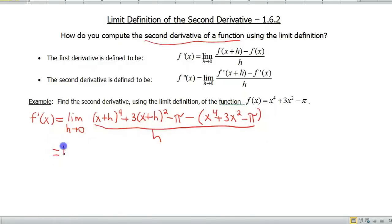Now I'm gonna have to subtract, and again, because my function comes in more than one piece, I'm gonna throw in a parenthesis, x to the fourth plus 3x squared minus pi all over h. Okay, so again comes some algebra fun. So I've got my limit, h approaches 0.